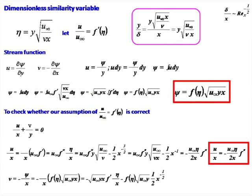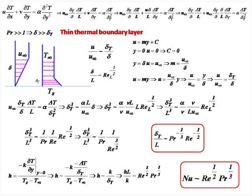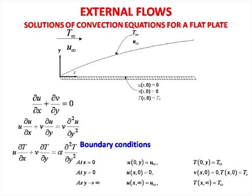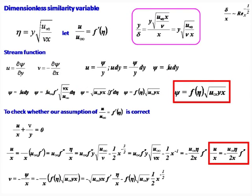Students usually have this doubt about when to use what — why is it Re to the power half, Pr to the power half, Re to the power one-third, Pr to the power one-third and so forth. All those questions have been answered by the scale analysis which was done so elegantly. Professor Bejan's book on convective heat transfer has this scale analysis done in detail. These are essentially the mathematics related to flow over a flat plate.